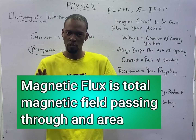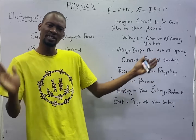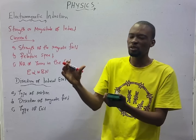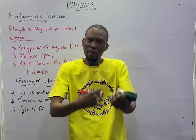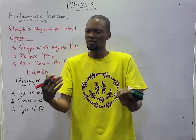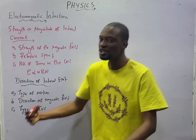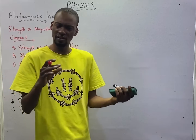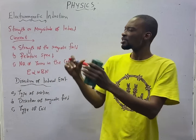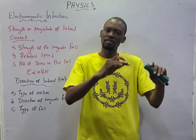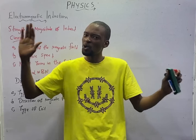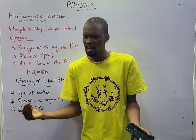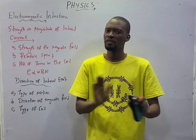The quantity or amount of magnetic field that is moving or varying is referred to as magnetic flux. One thing that should keep ringing in your mind is that when there is relative motion between a conductor and a magnetic field, EMF is induced, and this induced EMF gives rise to induced current. When the conductor is stationary and the magnetic field is also stationary, EMF is not induced. When the conductor and the magnetic field are moving at the same speed in the same direction, EMF will also not be induced.